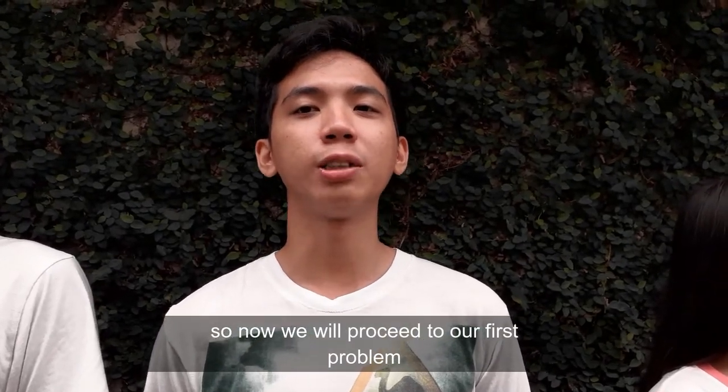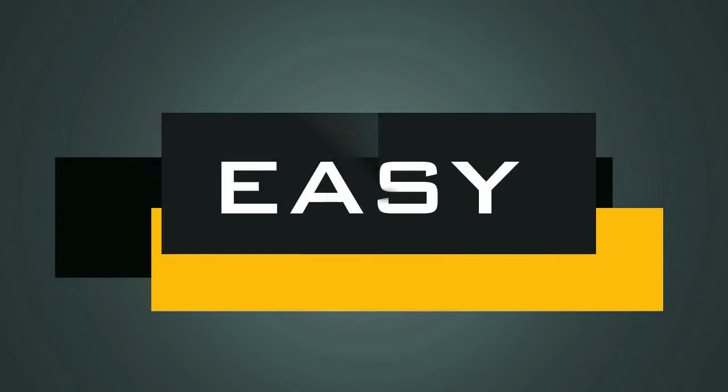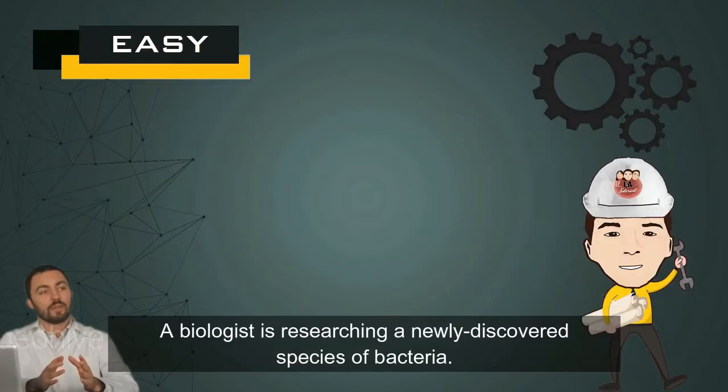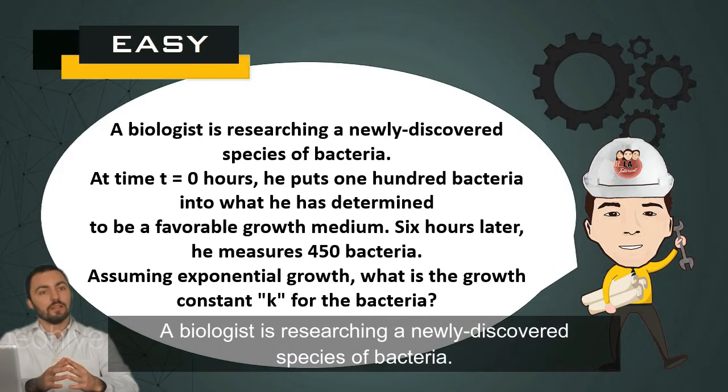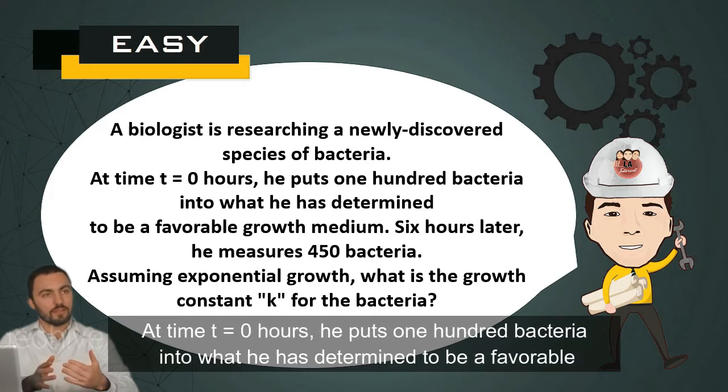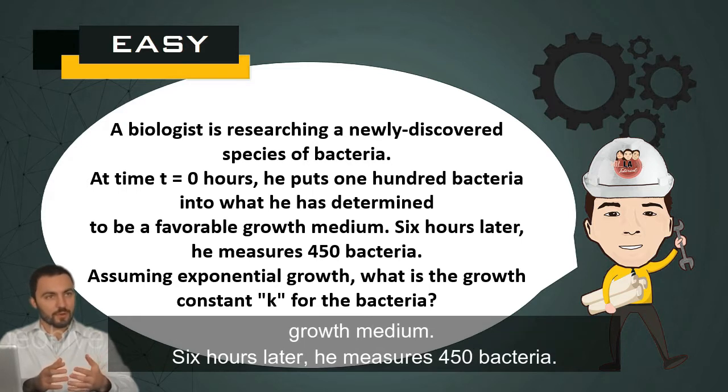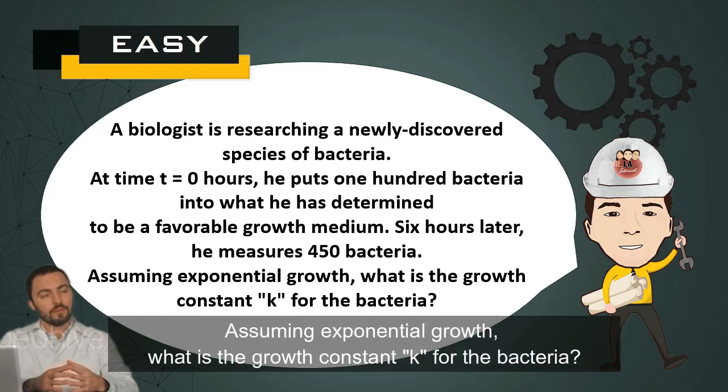So now we will proceed to our first problem. A biologist is researching a newly discovered species of bacteria. At time t = 0 hours, he puts 100 bacteria into what he has determined to be a favorable growth medium. Six hours later, he measures 450 bacteria. Assuming exponential growth, what is the growth constant k for the bacteria?